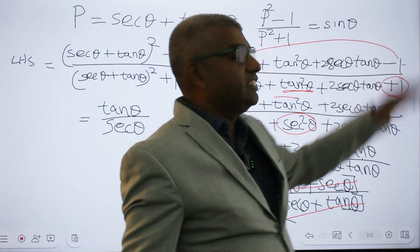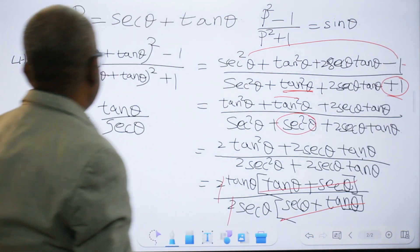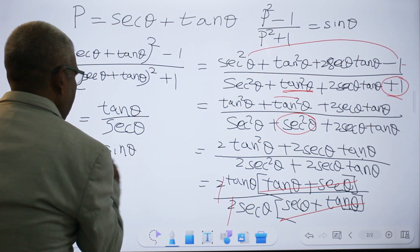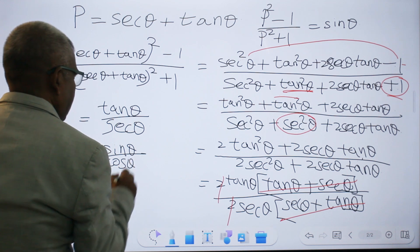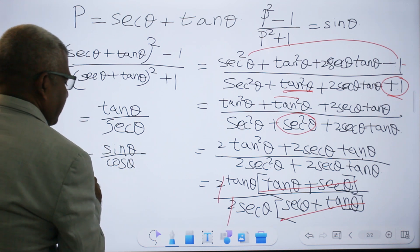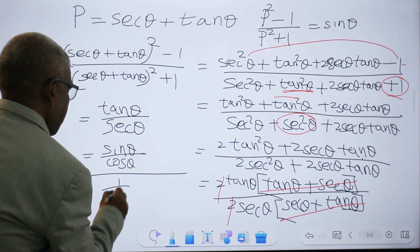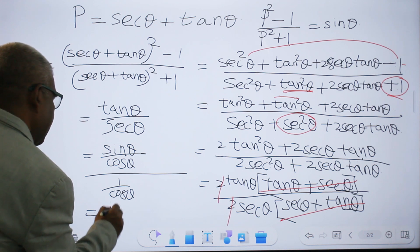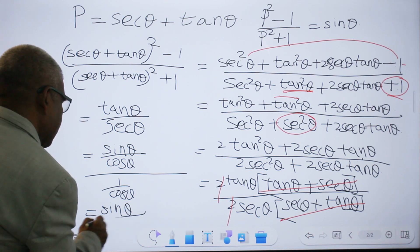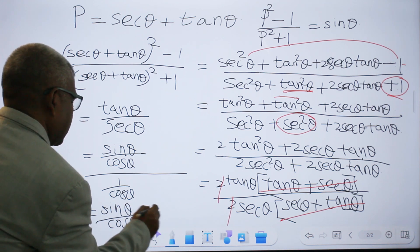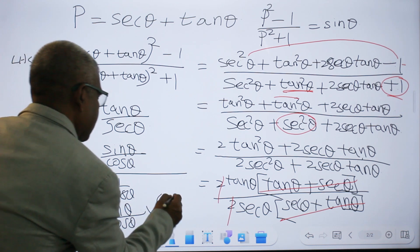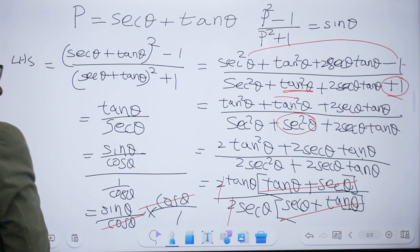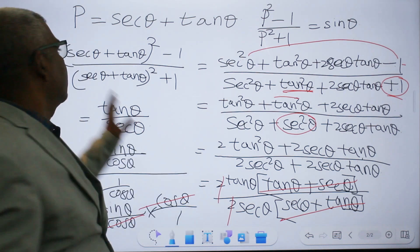The right-hand side is sin θ. tan θ is sin θ over cos θ, and secant θ is 1 over cos θ. So tan θ over secant θ equals sin θ over cos θ, times cos θ over 1. The cos θ cancels, leaving sin θ. Proven.